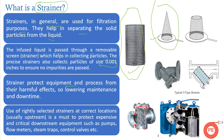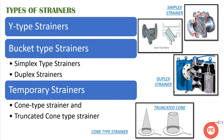Strainers protect equipment and processes from harmful impacts, lowering maintenance and downtime. Maintenance and downtime are major cost drivers in operational plants. To reduce downtime, lower maintenance costs, and save downstream equipment, we place strainers wherever required. A correctly selected strainer at the right location is a must to protect expensive and critical downstream equipment such as pumps, flow meters, steam traps, and control valves.